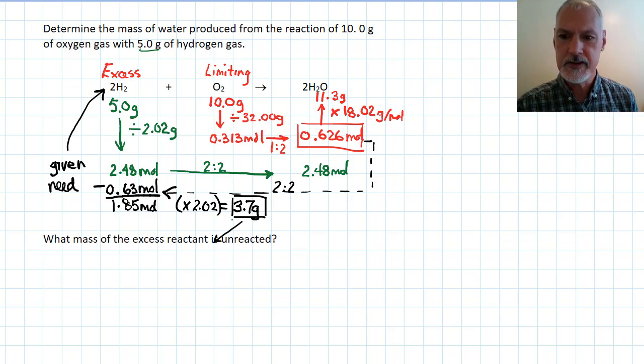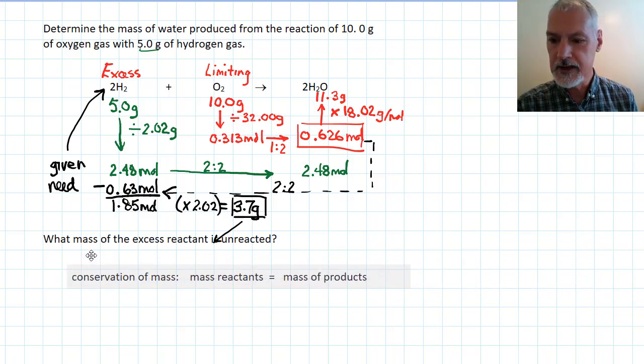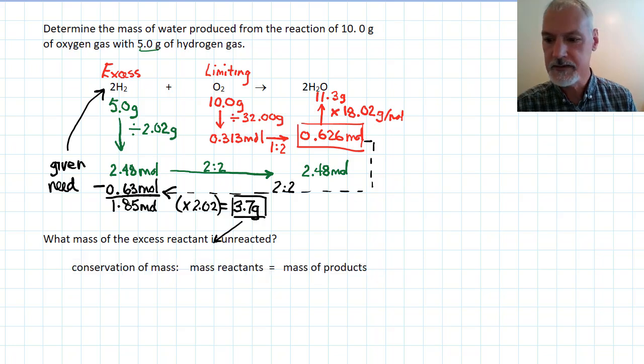But I want to show you another approach that could be used here from an idea in earlier science courses. It's called the law of conservation of mass. If I look at the mass of my reactants in this case, the hydrogen and the oxygen together, I had 5 grams of hydrogen, I had 10 grams, so that total mass then gives me 15 grams.